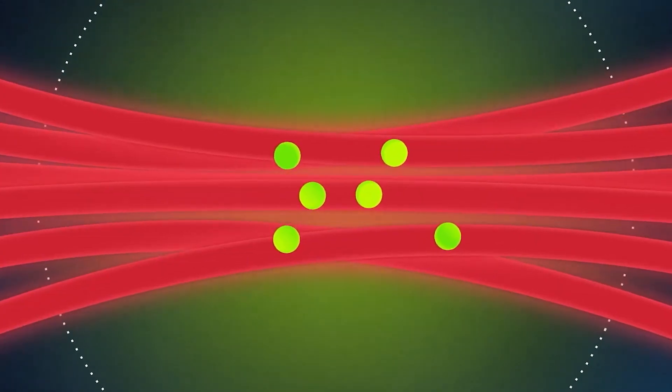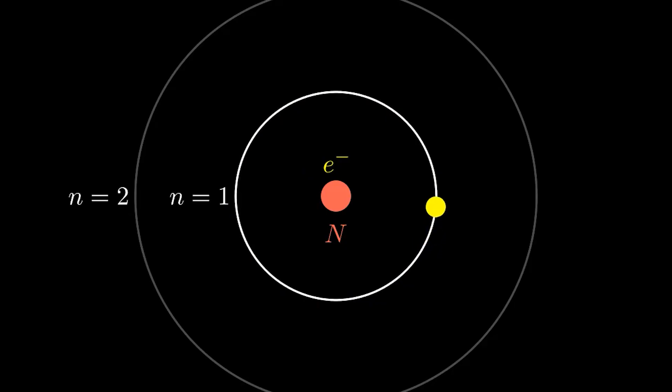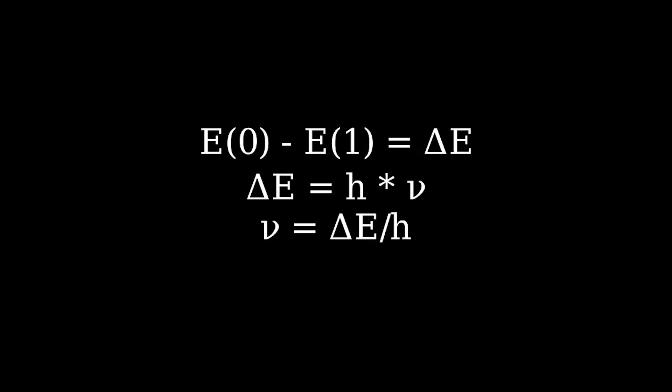We use these states as the zero and one states, and we can use lasers to go between them. So for example, if you wanted to perform a NOT gate where you swap a zero to a one, what you would do is shoot a laser at the frequency that corresponds to the energy difference between zero and one. You can calculate this using some basic physics formulas, but if you know the difference in energy between the zero and the one state, then you can calculate the frequency of light needed to make the transition.